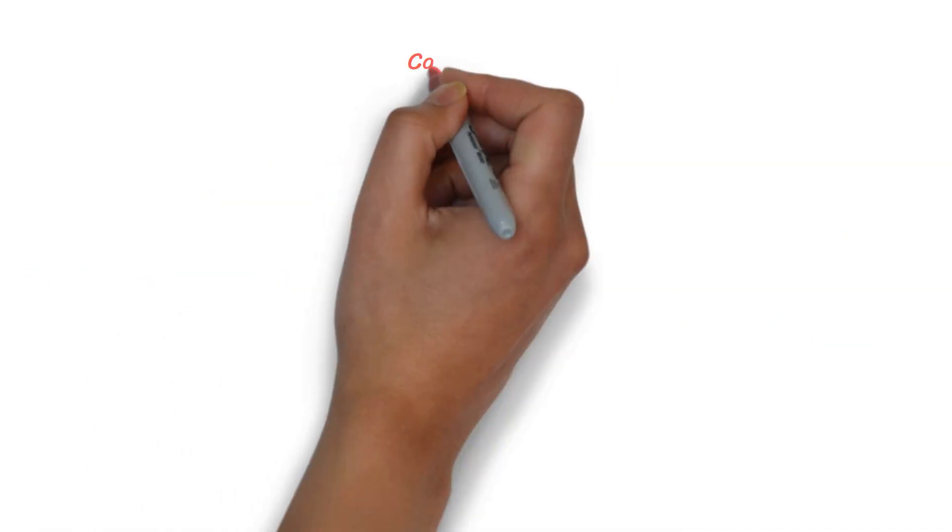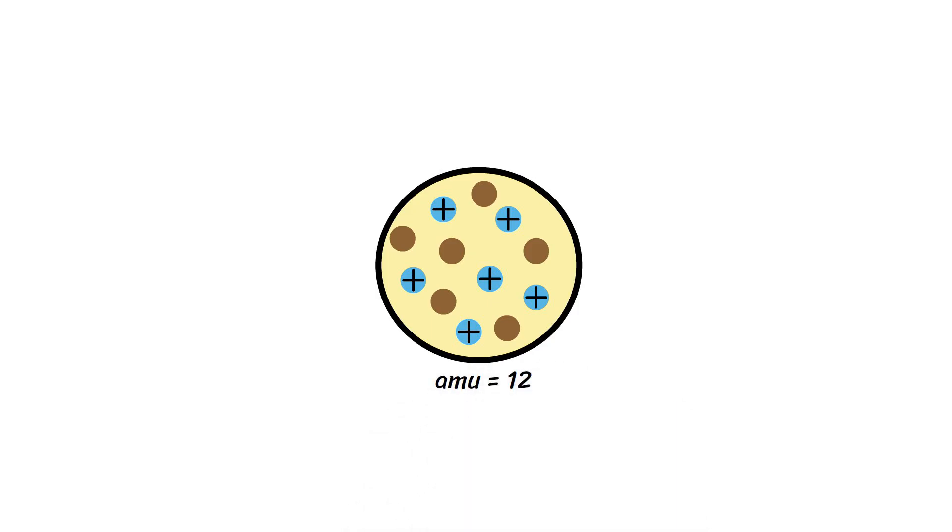Let's take a carbon atom as an example to understand the structure of an atom. A carbon atom has a nucleus at its center, which contains six positively charged protons and six neutrons that are neutrally charged. These protons and neutrons give the nucleus its mass and stability. As we discussed, the mass of an atom is equal to the number of protons and neutrons. Therefore, the atomic mass of carbon is equal to 12.